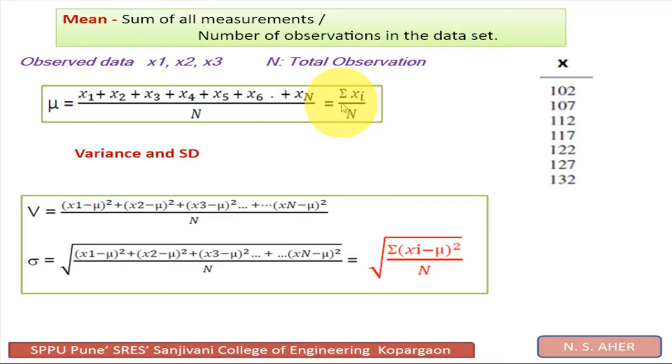In summary: mean = summation of xi upon total number of observations N; variance V = summation of (xi − μ)² upon N.